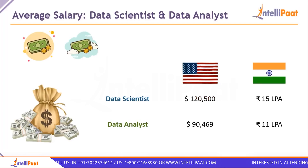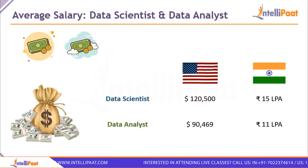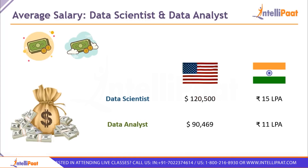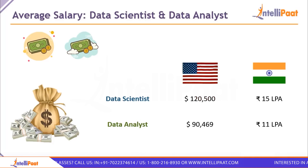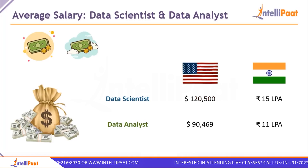On average, a data scientist earns around $120,000 per year in the United States and over 15 lakhs per annum in India. A data analyst earns around $90,000 in the USA and about 11 lakhs per annum. These are average figures — a data scientist can earn up to 40 or 50 lakhs per annum and a data analyst can go up to 30 lakhs per annum with the right experience and certifications.